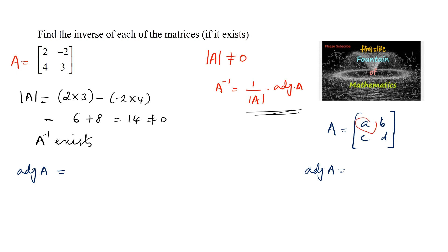And then changing the sign of the non-diagonal elements b and c, we get minus b and minus c.